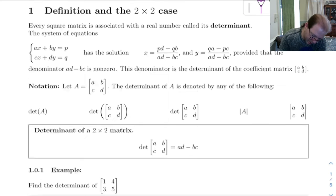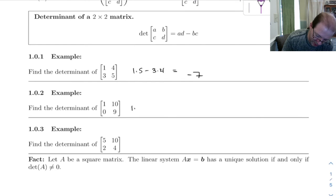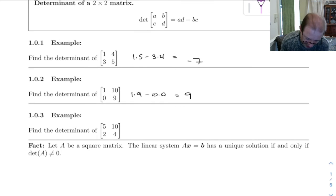I've got three examples here. This first one, the determinant of this matrix is going to be 1 times 5 minus 3 times 4. So that's 5 minus 12 is negative 7. The next one is 1 times 9 minus 10 times 0, which has a determinant of 9. And this one has a determinant of 5 times 4 minus 10 times 2. Well, that's 0.